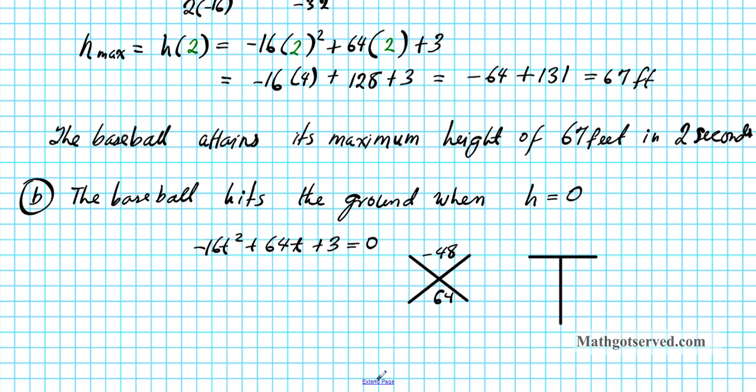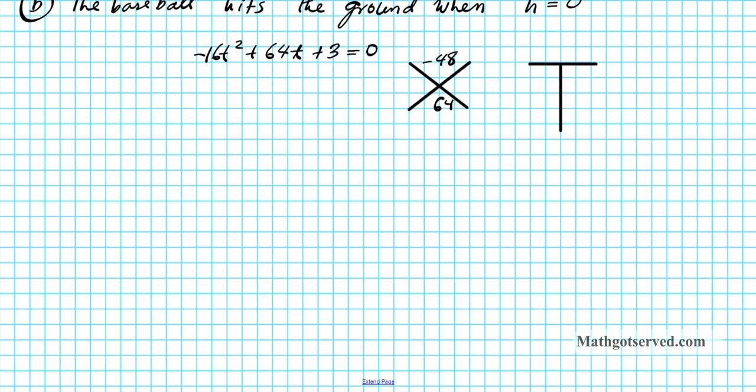So let's go ahead and write at least all the possible integers that multiply to give you 48. So 48, we know 1 times 48 yields 48, 2 times 24 yields 48, 3 times 16 yields 48, 4 times 12 yields 48, and also 6 times 8 also yields 48. So can we get a result of 48 by combining any of these two pairs? The answer is absolutely not. This gives us 49 or 47, this gives us 22 or 26, this gives us 19 or 13, this gives us 8 or 16, this gives us 2 or 14. So none of them yield 48. So what does that mean? That means that this quadratic equation is prime.